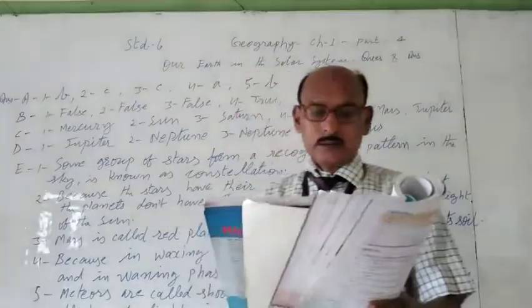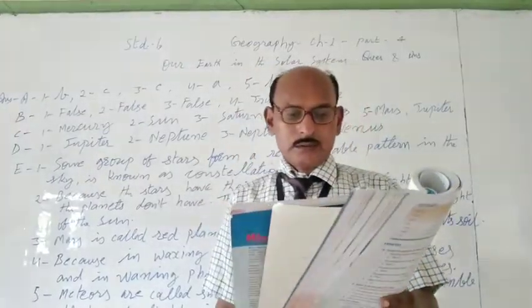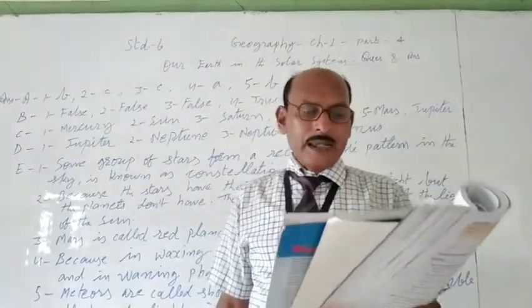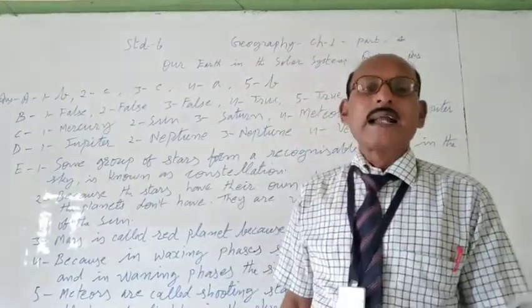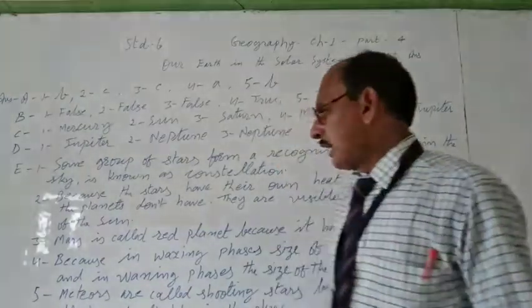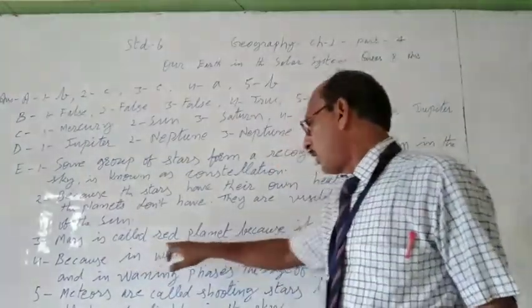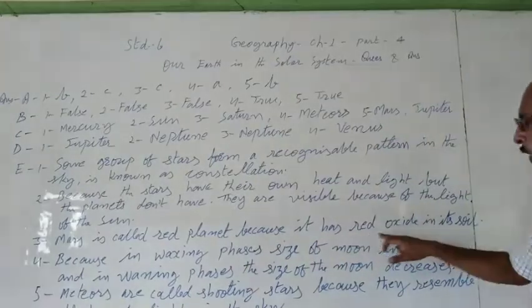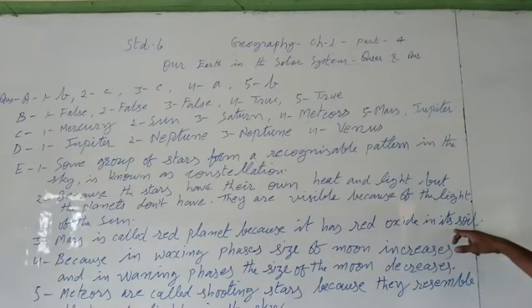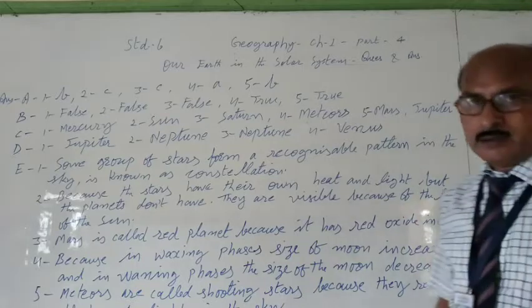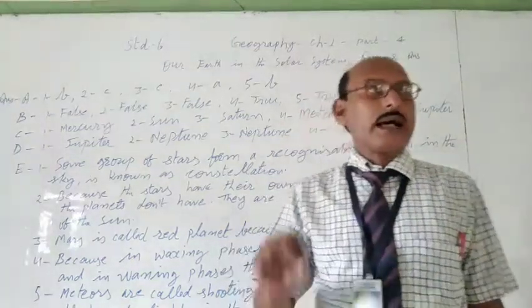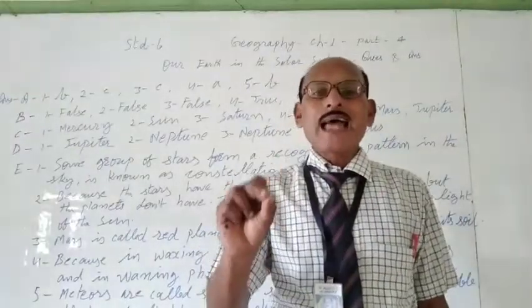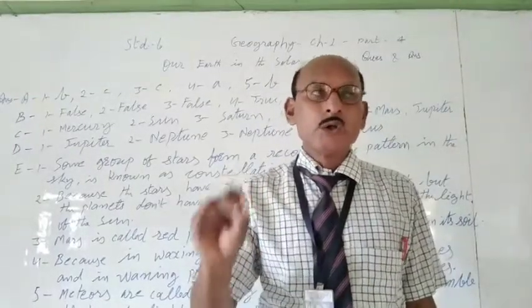Third, explain why Mars is called the red planet. So the answer is, Mars is called the red planet because it has red oxide in its soil.